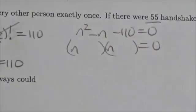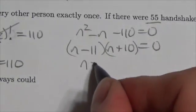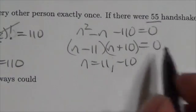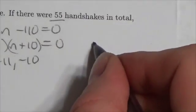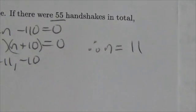It'll be negative 11 and plus 10, and so my answers will be 11 and negative 10. The negative doesn't make any sense, so therefore n equals 11. There were 11 people in that group.